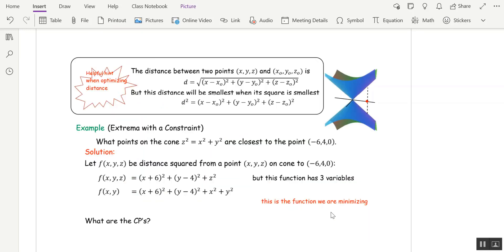All right, we're going to finish up with an application. And I want to remind you that whenever you're maximizing or minimizing distance, which is this formula here in three variables, it's easier to maximize or minimize distance squared because you can get rid of that square root. And so that's what I'm going to do in this example here, which is an extrema with a constraint. So what points on the cone z squared equal x squared plus y squared are closest to negative 6, 4, 0? So this is a distance problem. Closest is distance.